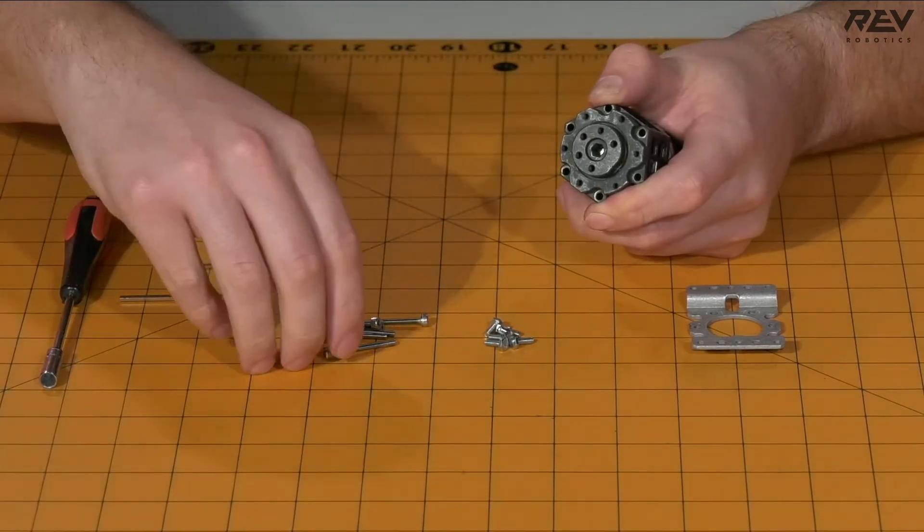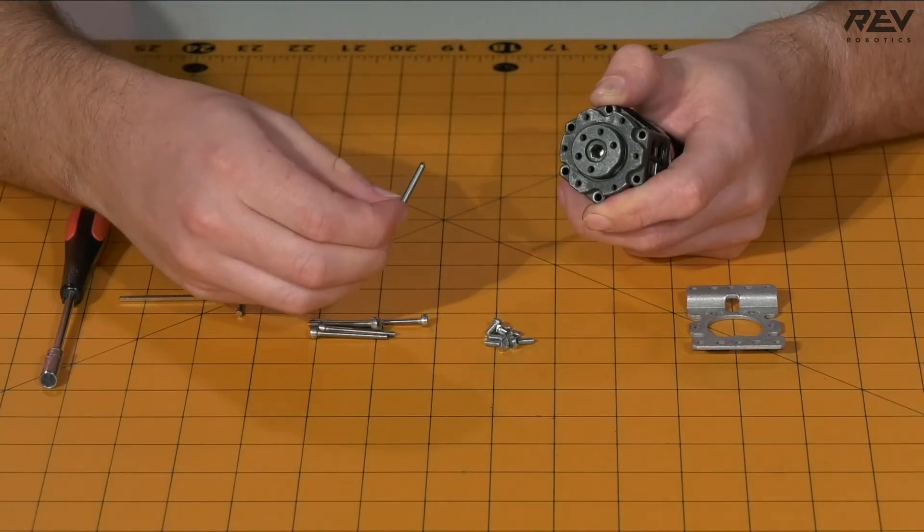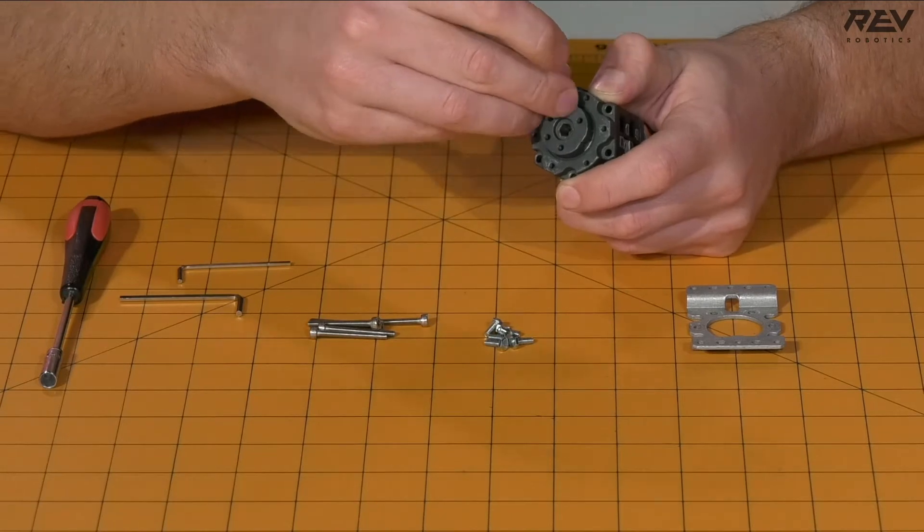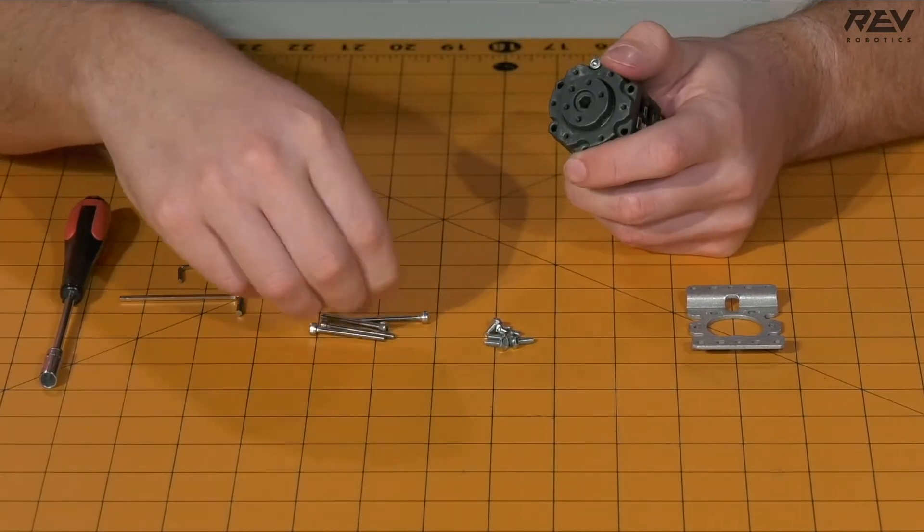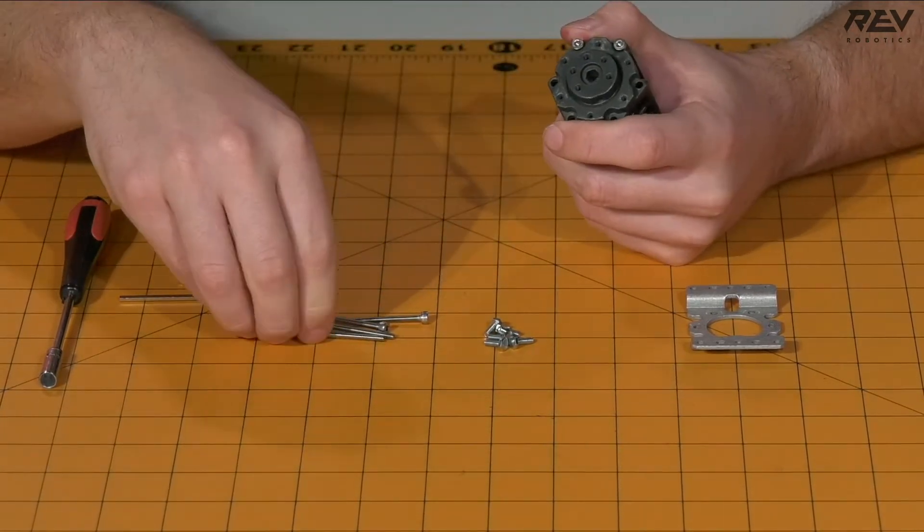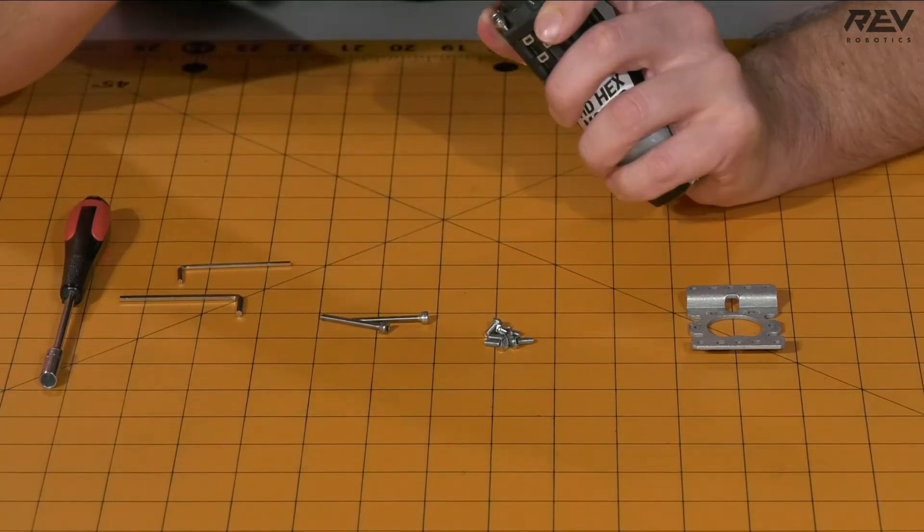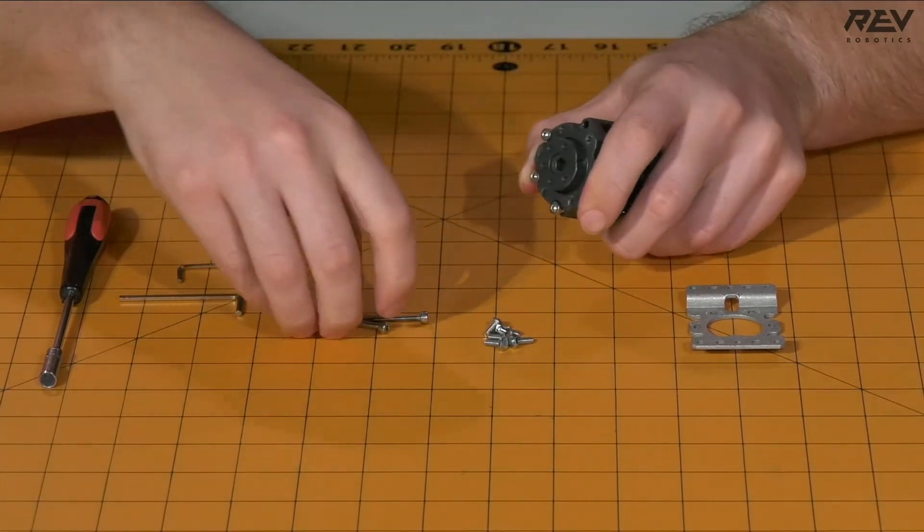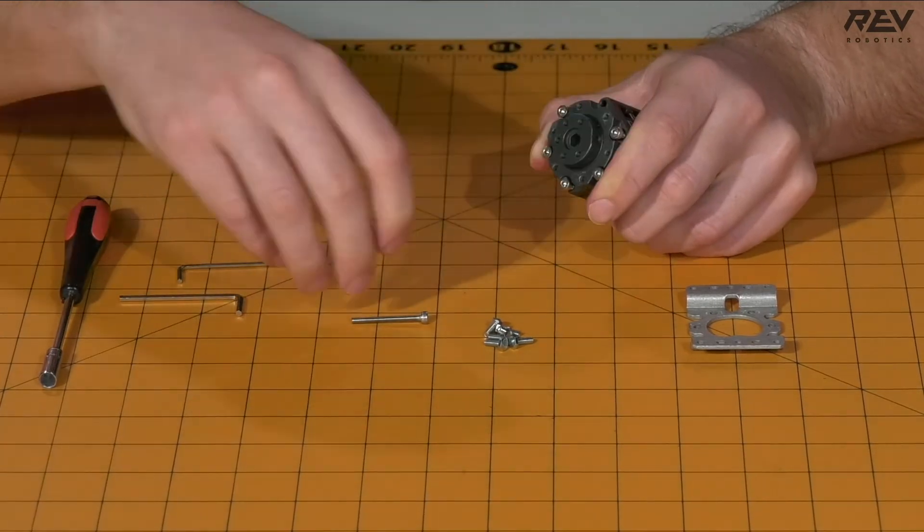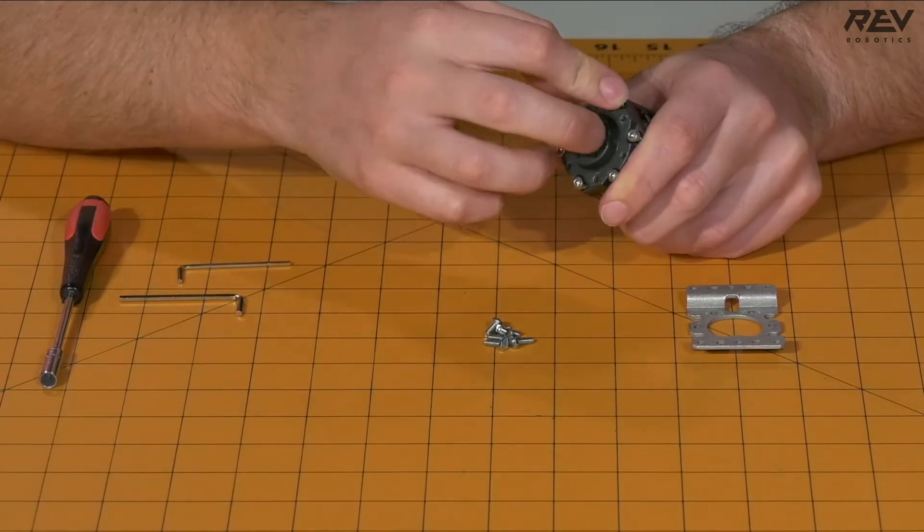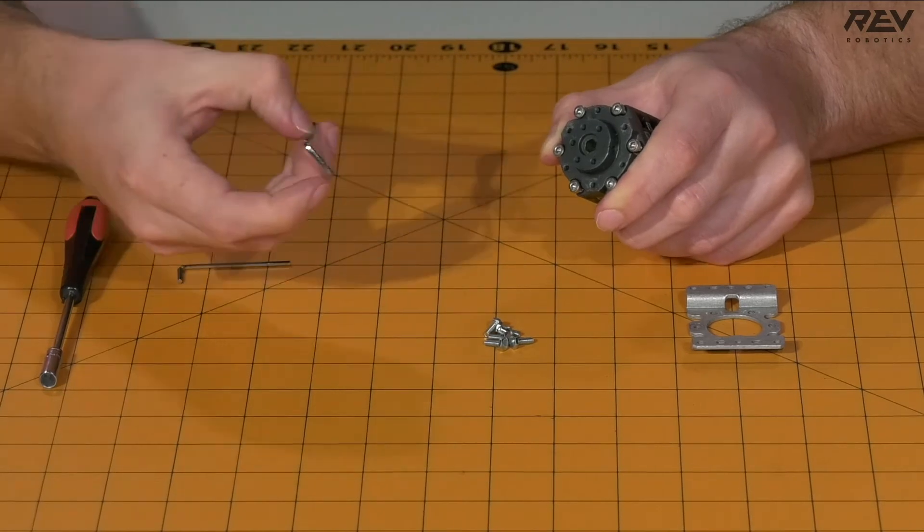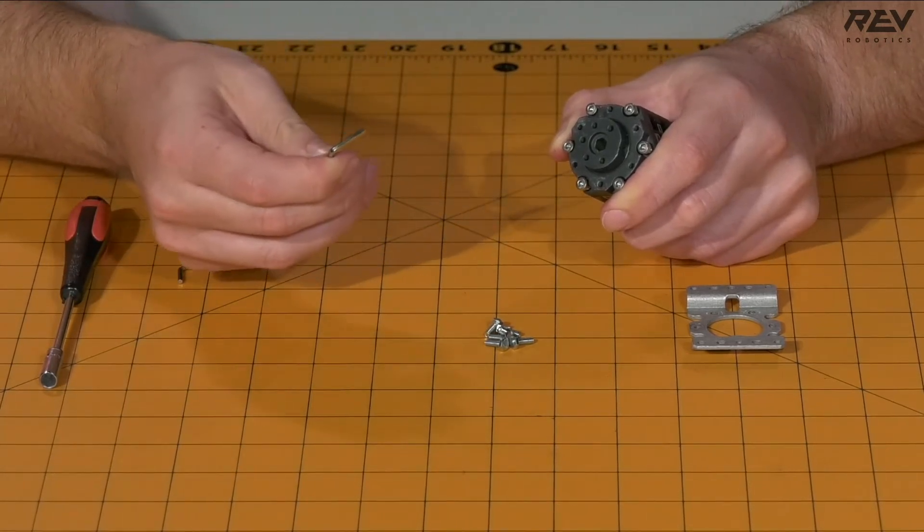Once all those are on, you're going to want to take the 30mm long M3 hardware and get them started in the mounting holes to tighten up the gearbox. To tighten down these, you're going to need your 2.5mm Allen wrench.